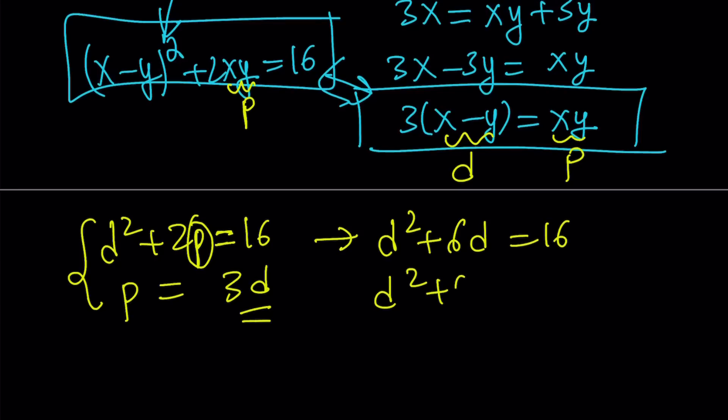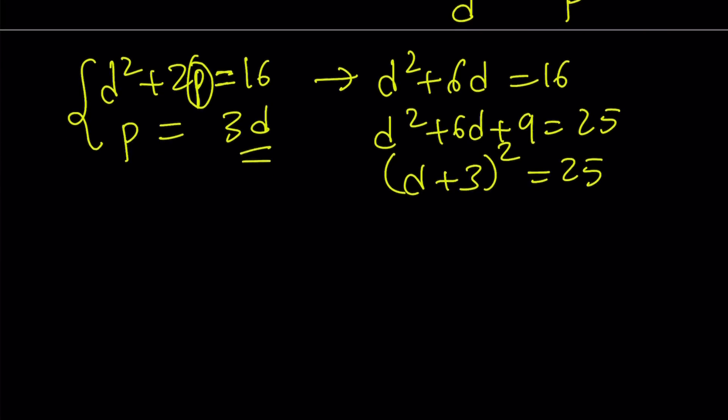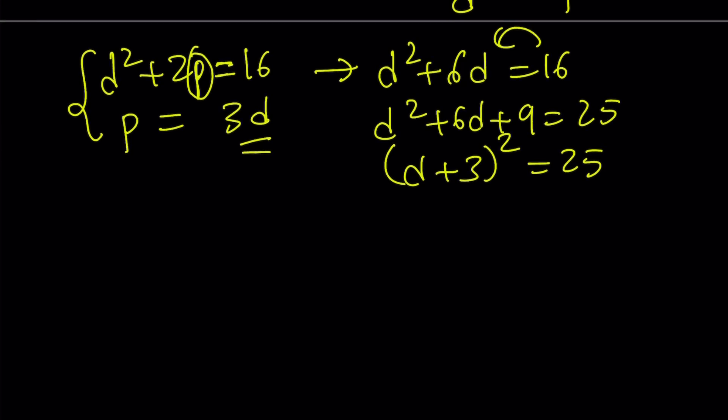And from here, we get, if we add 9 to both sides, again, we get the similar scenario. d plus 3 quantity squared. Or you can use quadratic formula. Or you can put everything on the same side and factor it, same thing. Doesn't matter.